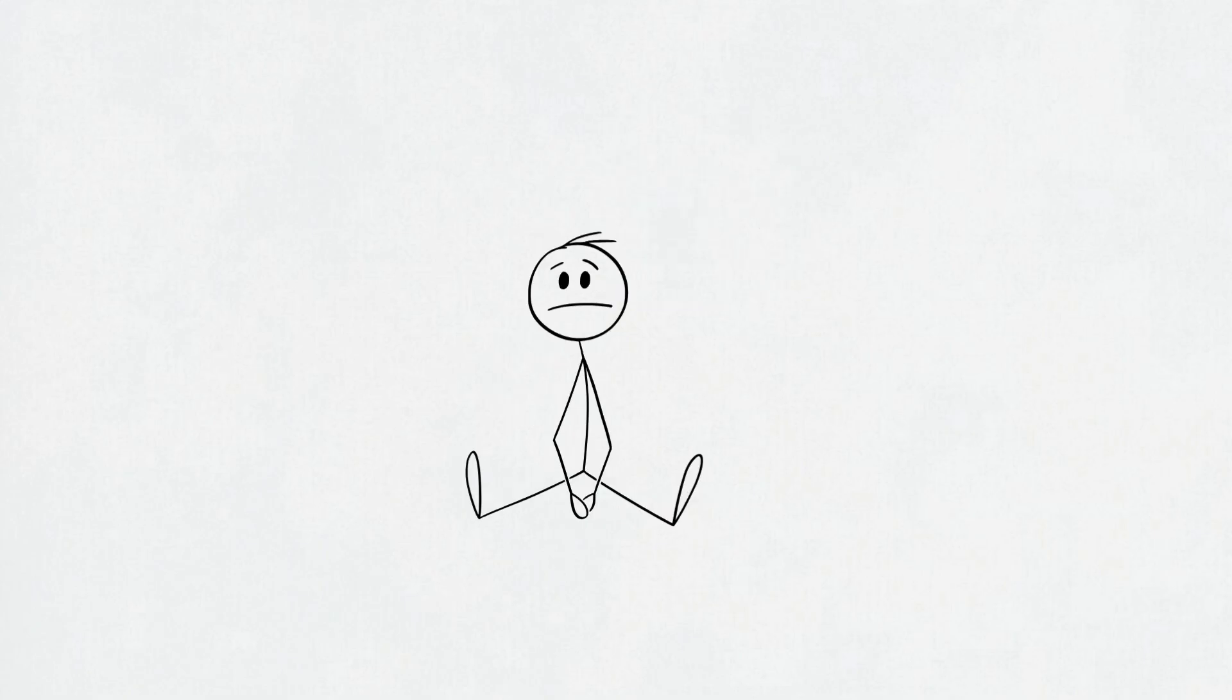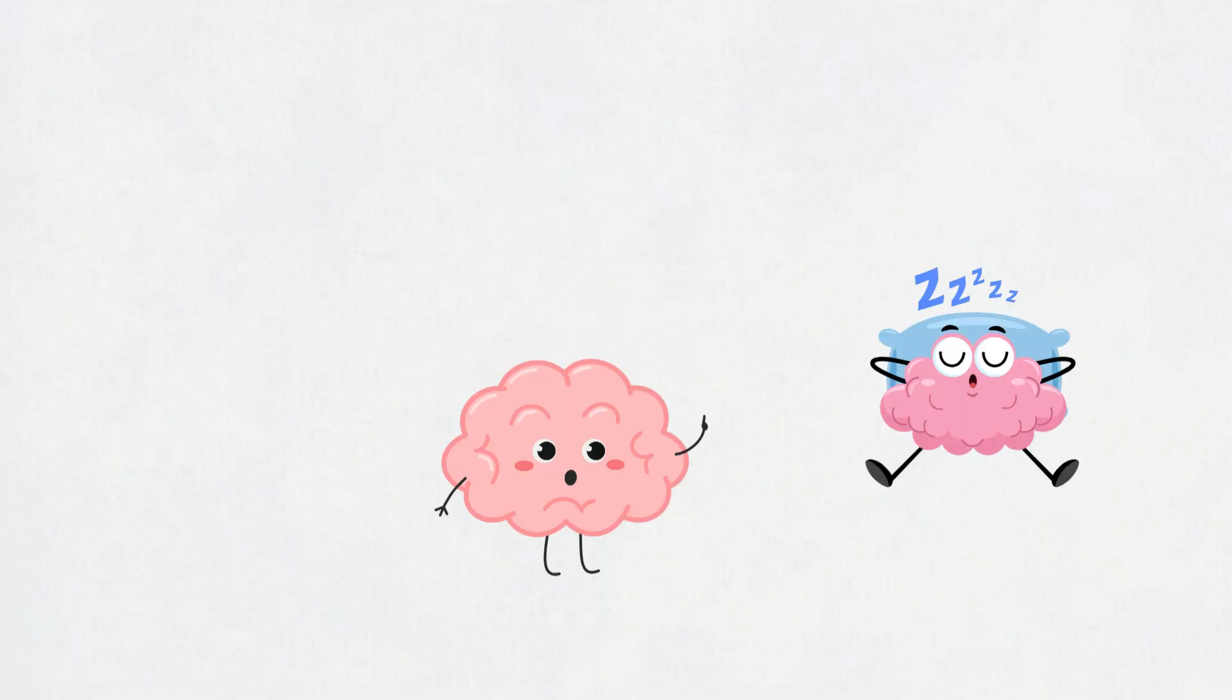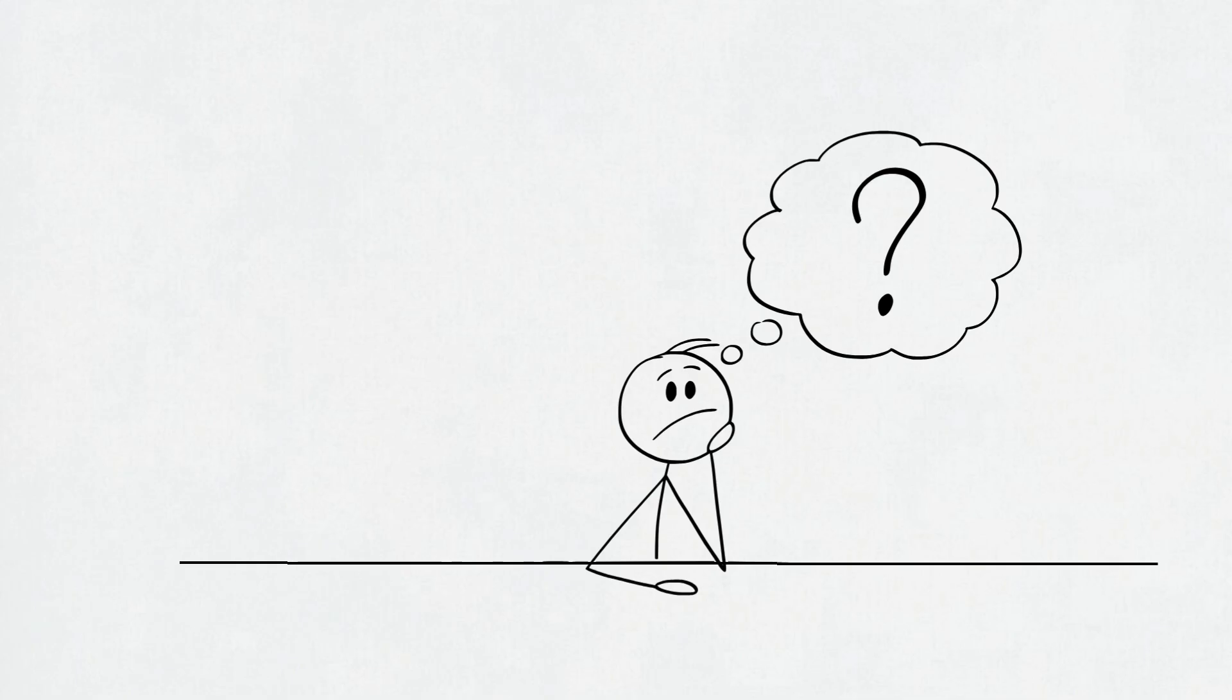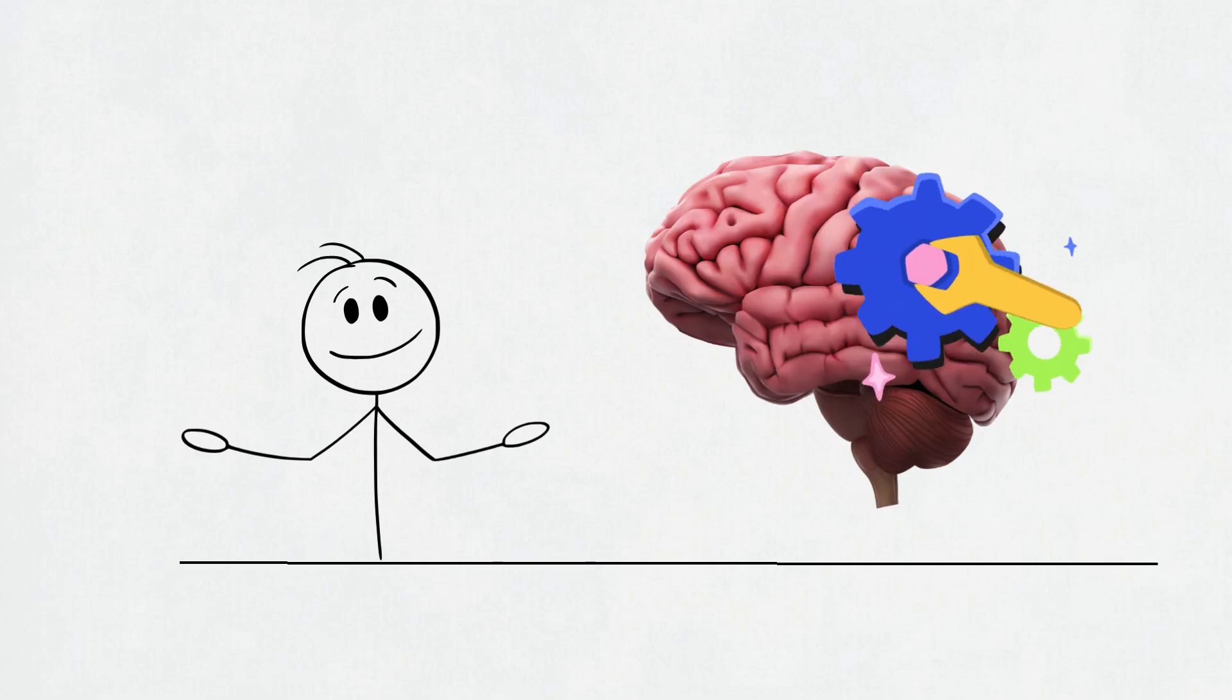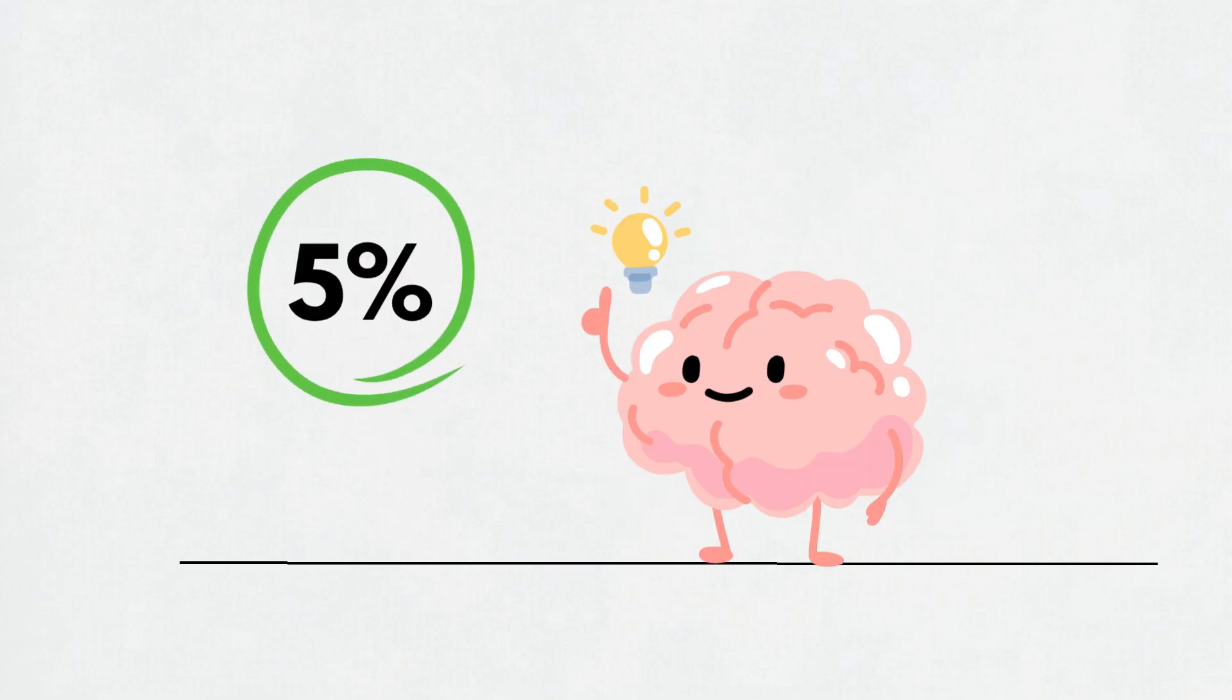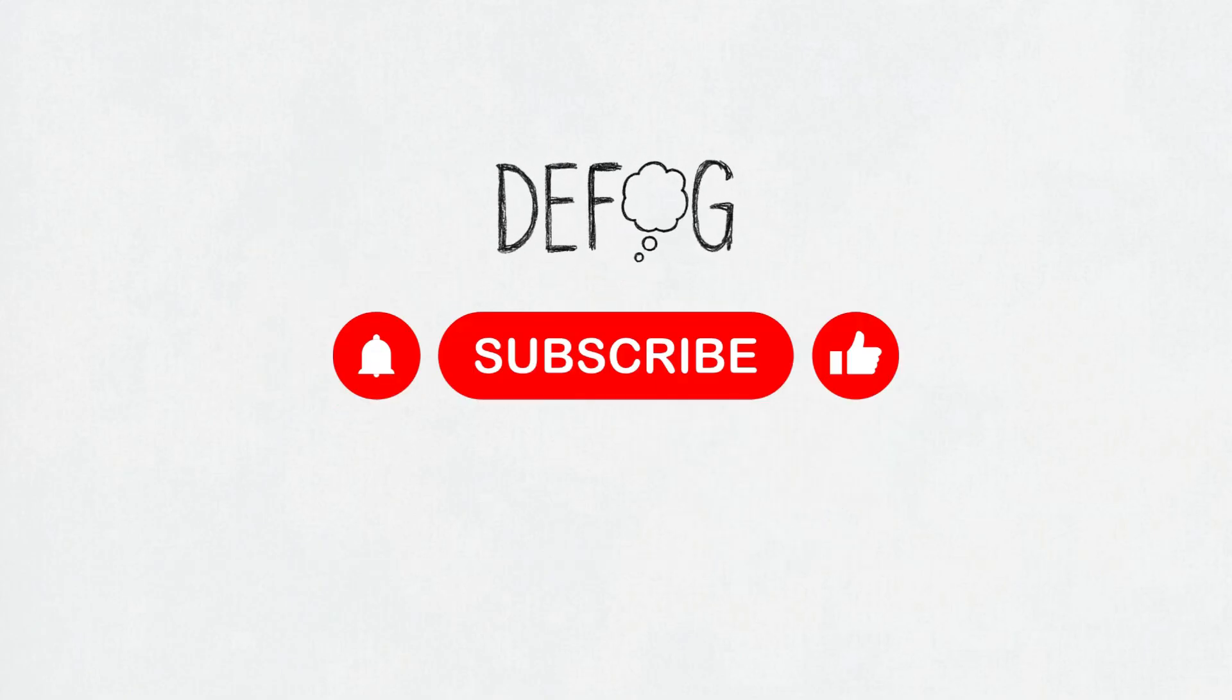Remember, distraction is not failure. It's feedback. It doesn't mean you suck at life. It means your brain needs rest, fuel, direction, or just a break from doom scrolling. If you've made this far, two things are likely true. One, you care about how your brain works. Two, you definitely zoned out at least once during this chapter. That's fine. I did too. So now, what's one tool you're actually going to try this week? Let me know in the comments. And if your brain feels even 5% less foggy than when you started, that's a win. Subscribe to Defog because your attention deserves better. And so do you.